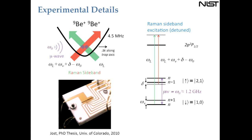We apply Raman laser beams for stimulated Raman transitions. The qubit states are two ground-state hyperfine states of beryllium, separated by 1.2 gigahertz — in the microwave regime. We can drive the carrier with a microwave transition, and in this case I've drawn a motion-subtracting sideband transition. There is also a small detuning on the scale of kilohertz.